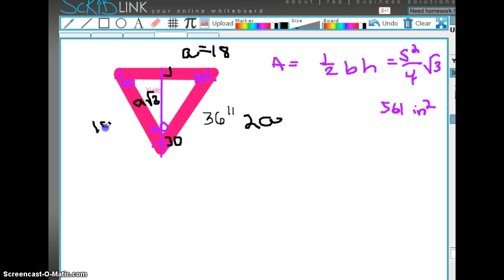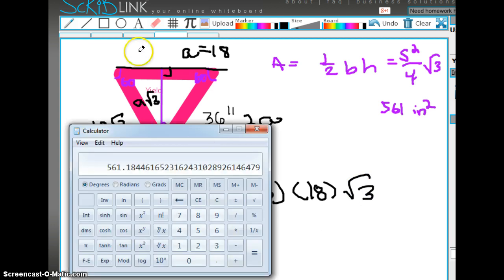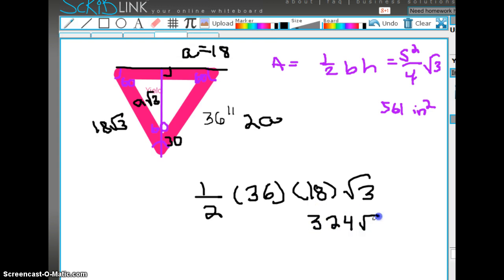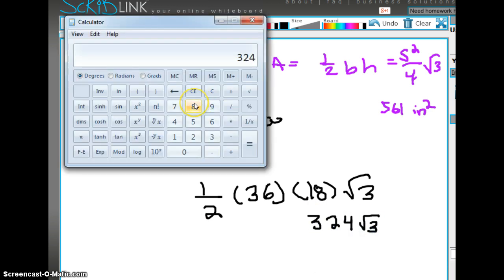This side is 18 square root of 3 so let's try using the formula one half the base, all the way across here is going to be 36, and the height which is down here is 18 square root of 3. Half of 36 is 18, 36 divided by 2 is 18 times 18 is equal to 324 radical 3. Let's check that out decimally. 324 times 3 square root equals 561 inches cubed.